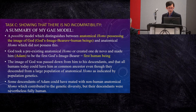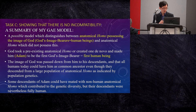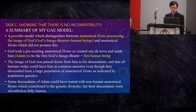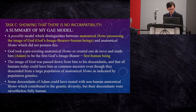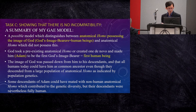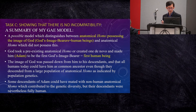These are some of the key elements of my model for Task C — for showing that there's no incompatibility between evolution and the Bible. This is a possible model which distinguishes between anatomical homo possessing the image of God, whom I call God's image bearers and define as equivalent with human beings, and anatomical homo which did not possess the image of God. On my model, God took a pre-existent anatomical homo, or created one de novo, and made him — Adam — to be the first God's image bearer.